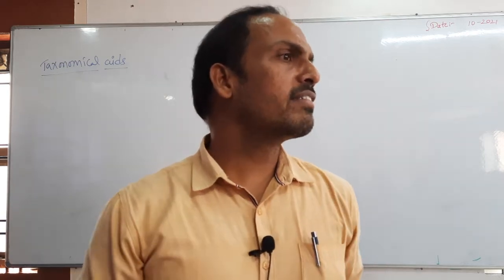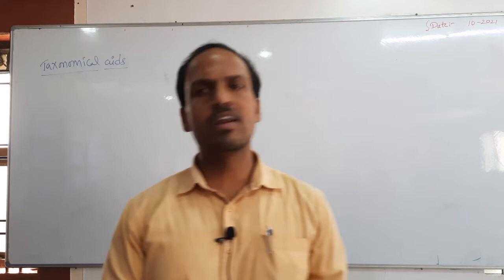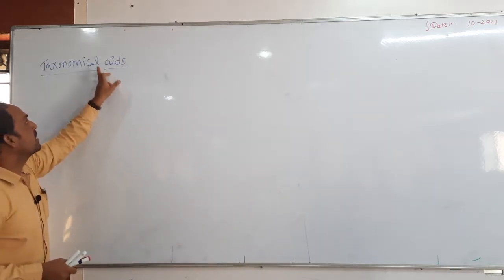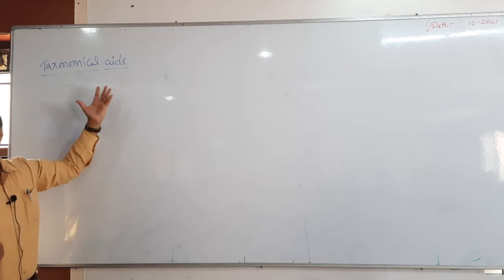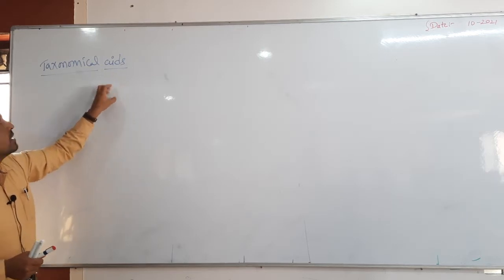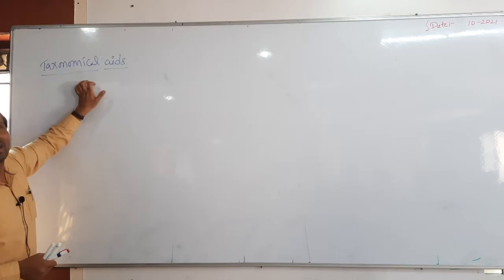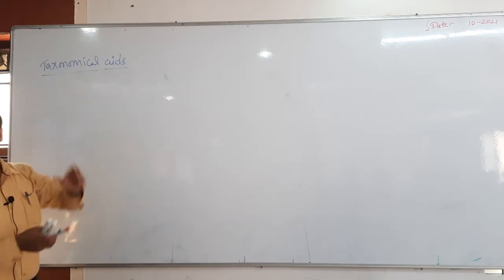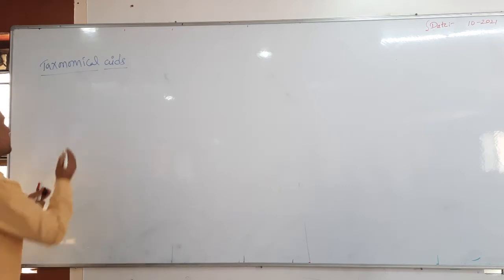So, what is aids? Taxonomical aids means tools or devices used for taxonomy or identification of an organism. That is called taxonomical aids.